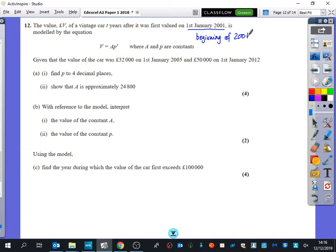Given that the value of the car was 32,000 on January the 1st 2005. So that is four years later. So you have to think 2001 was at the beginning when T was zero. Then you've got 2002, 2003, 2004, 2005. So at this point, we know that T is equal to four. And we've said that the value is 32,000. So we get the value is 32,000 after four years. And we get that the value is 50,000 after 11 years. So we're going to try and find out the value of P and we're going to try and find out the value of A as well. So we've got V equals APT. I'm going to use that first bit. So I've got 32,000 is equal to AP to the power of four. I've also got 50,000 equals AP to the power of 11.